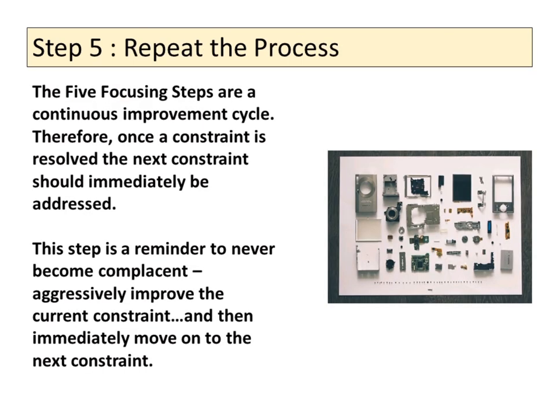Step 5: Repeat the process. The five focusing steps are a continuous improvement cycle. Therefore, once a constraint is resolved, the next constraint should immediately be addressed. This step is a reminder to never become complacent — aggressively improve the current constraint and then immediately move on to the next constraint.